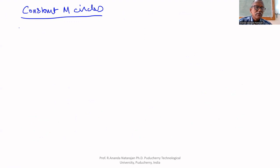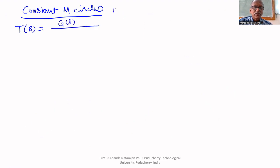We know that for a unity feedback system, the closed loop transfer function T(s) is equal to G(s) upon 1 plus G(s).